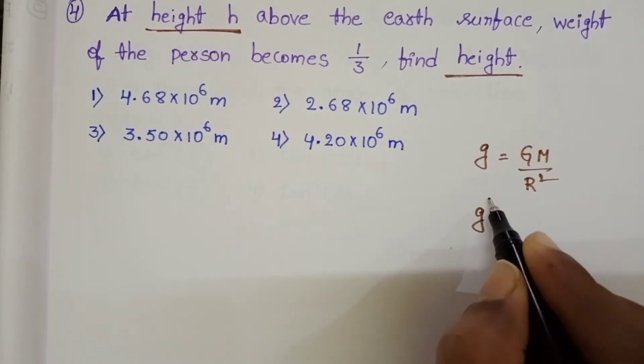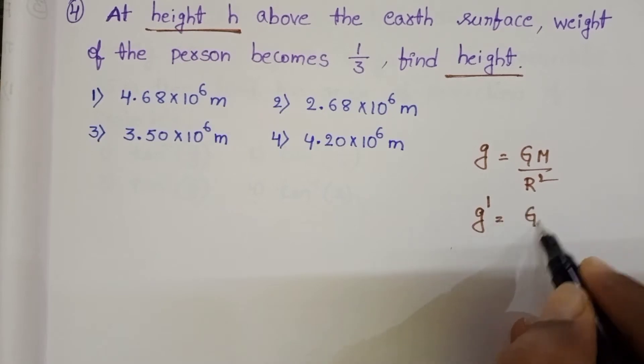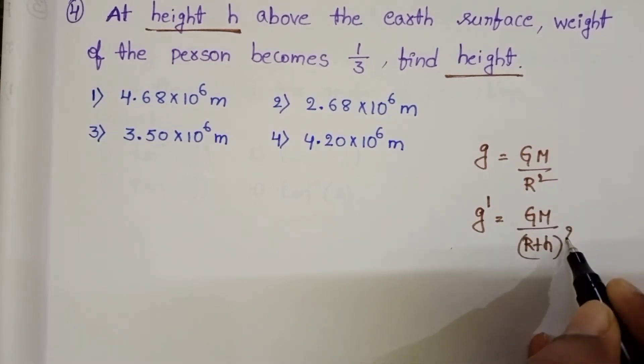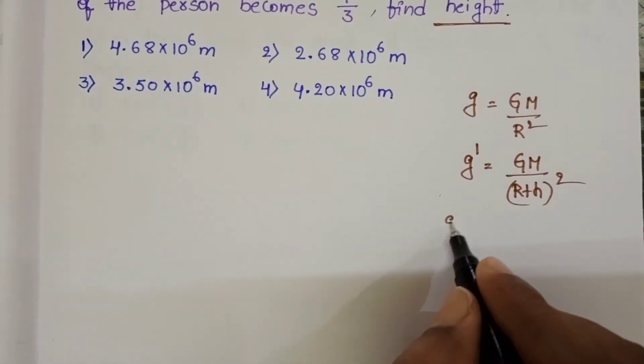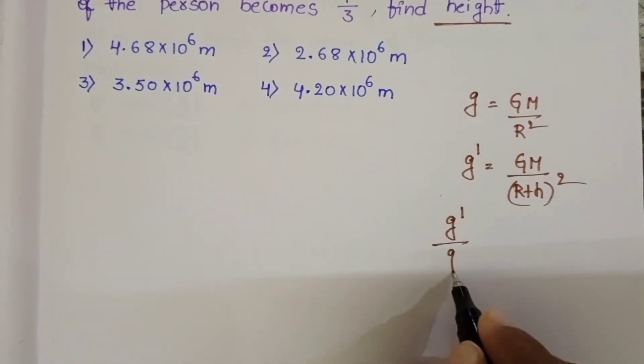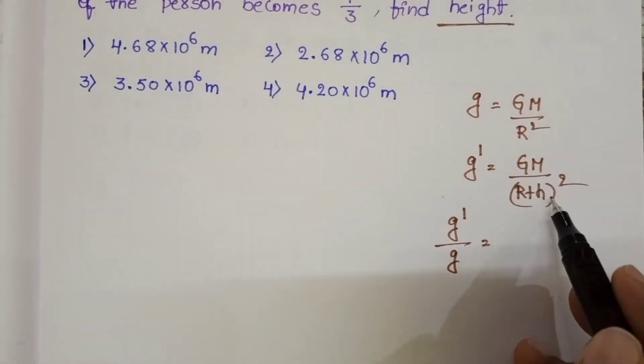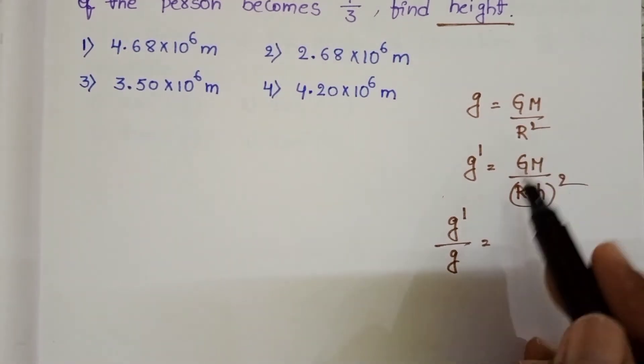When height increases, then acceleration due to gravity changes to GM by (r plus h) whole square. So now from this, g dash by g equals GM by (r plus h) whole square divided by GM by r square.